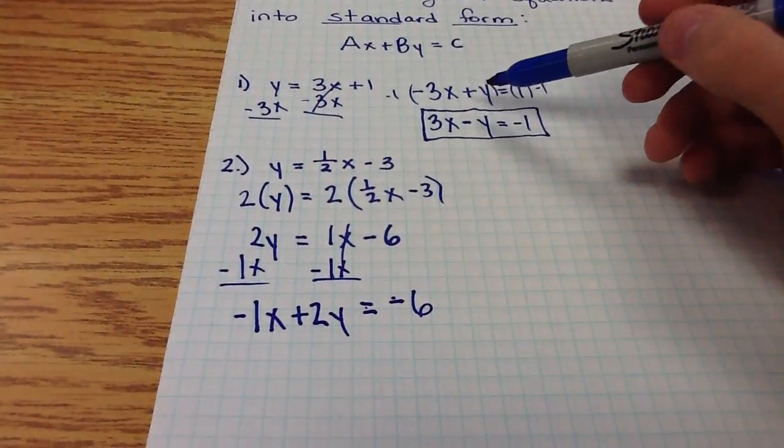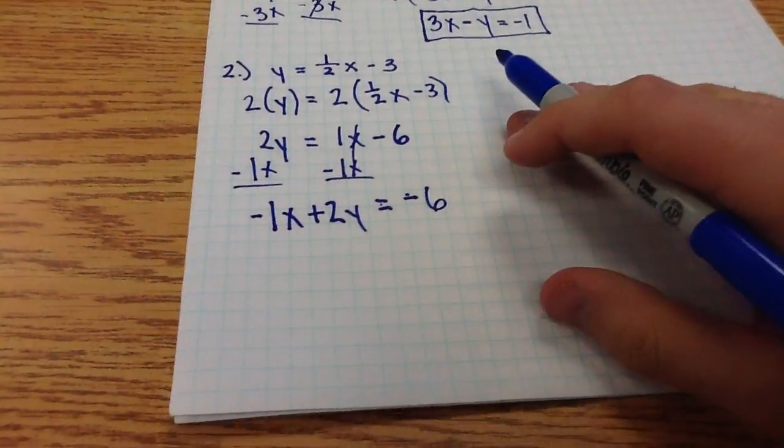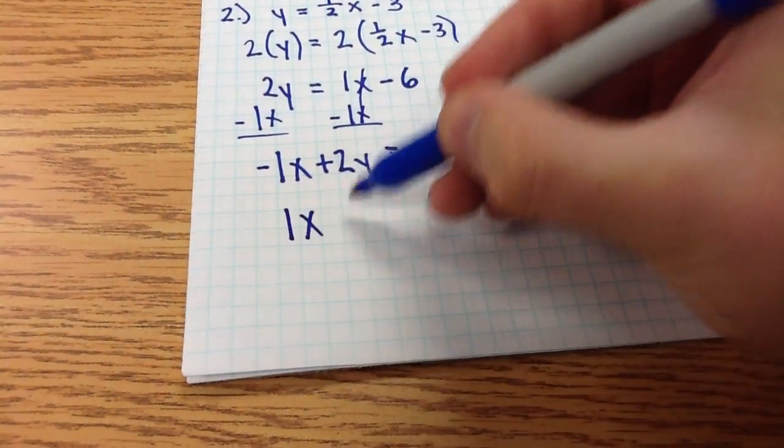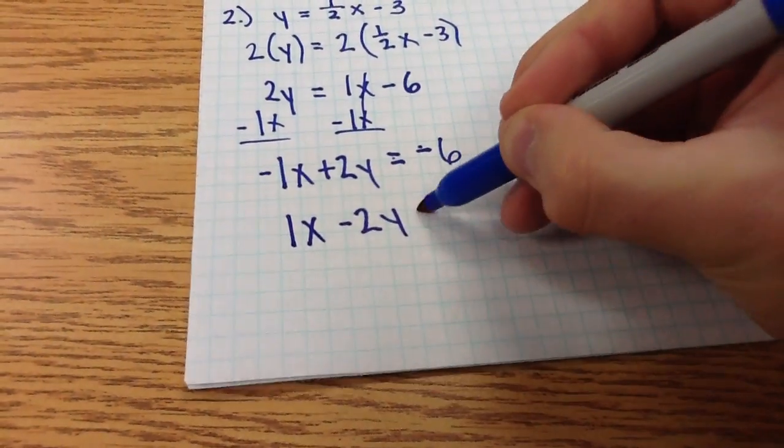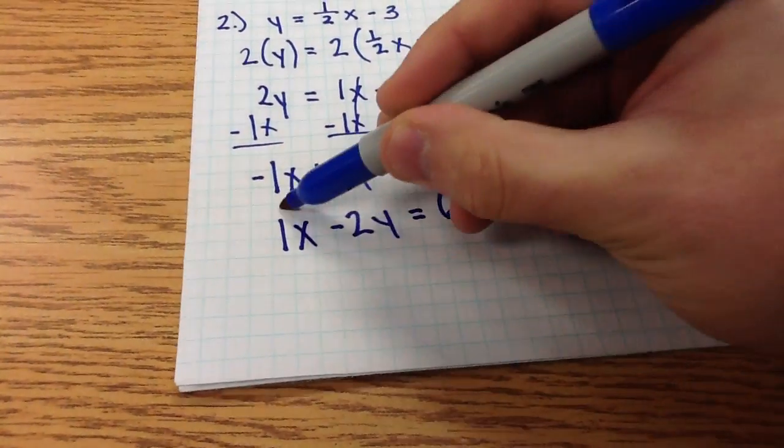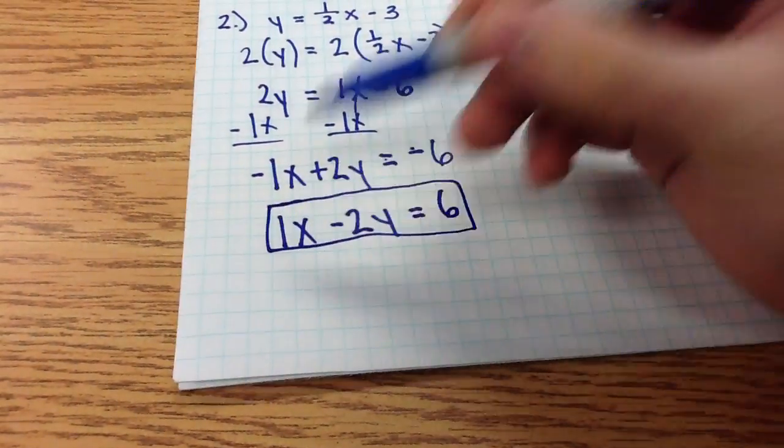And again, just like up here, we're going to multiply both sides by negative 1 to arrive at standard form, which will be 1x minus 2y equals positive 6. And that is our answer. Thank you.